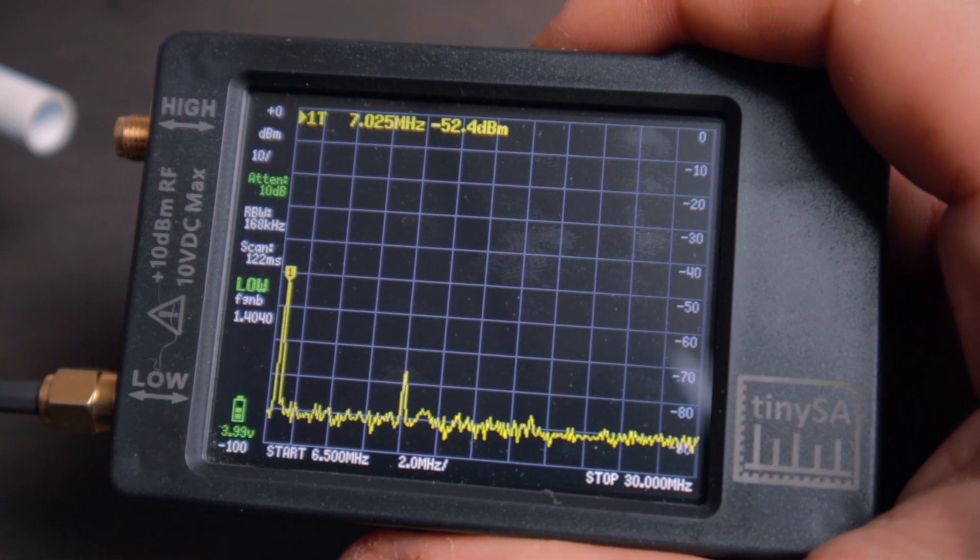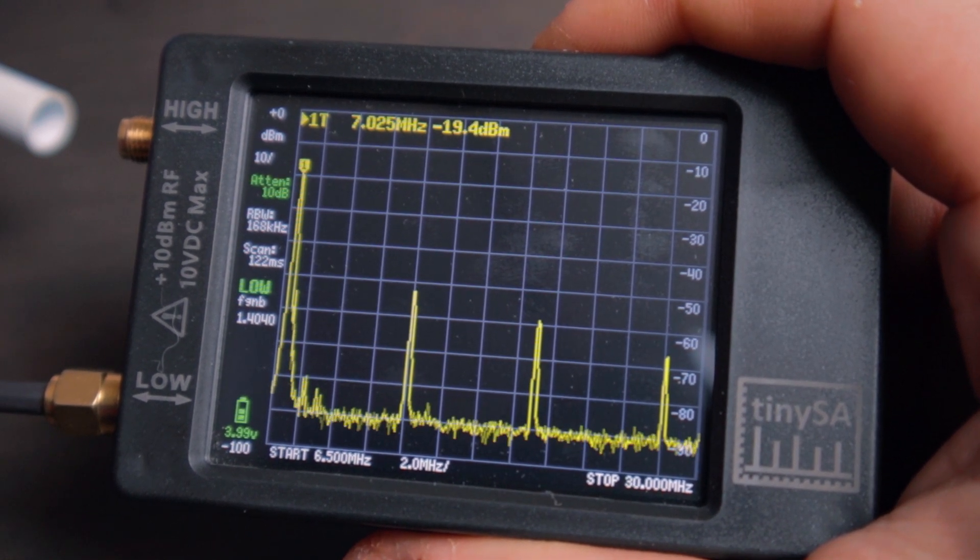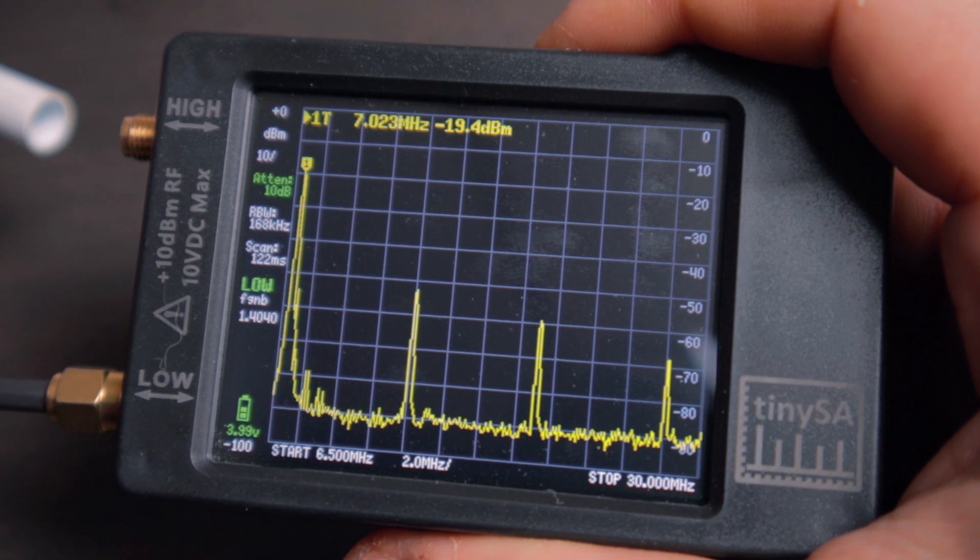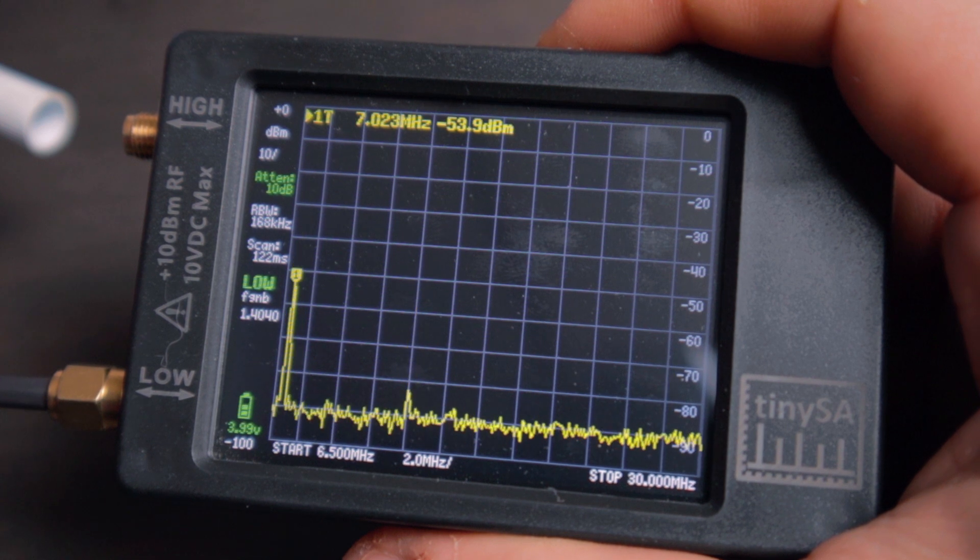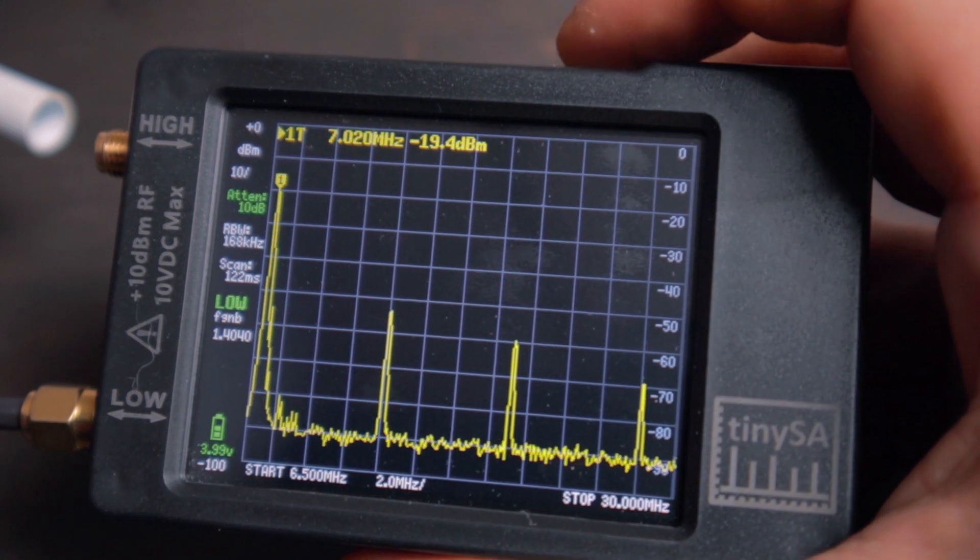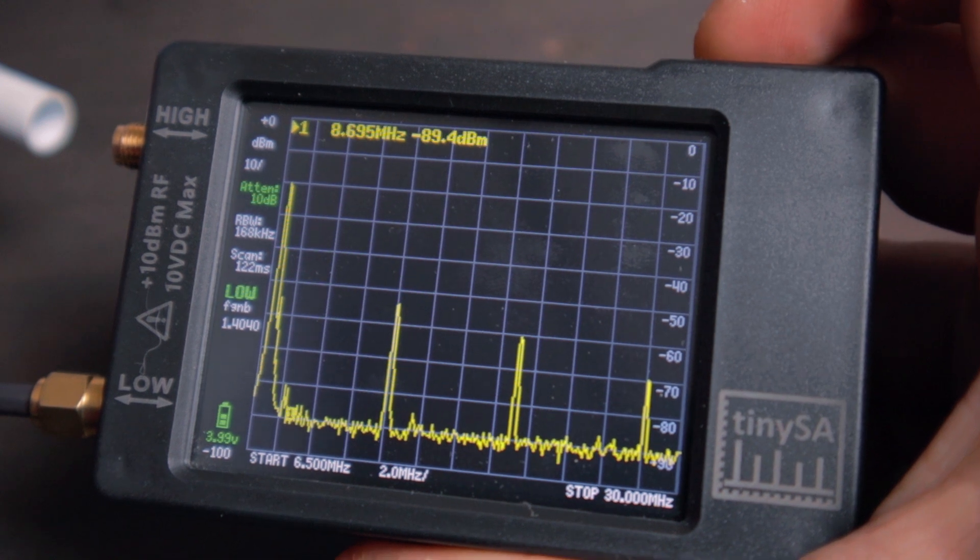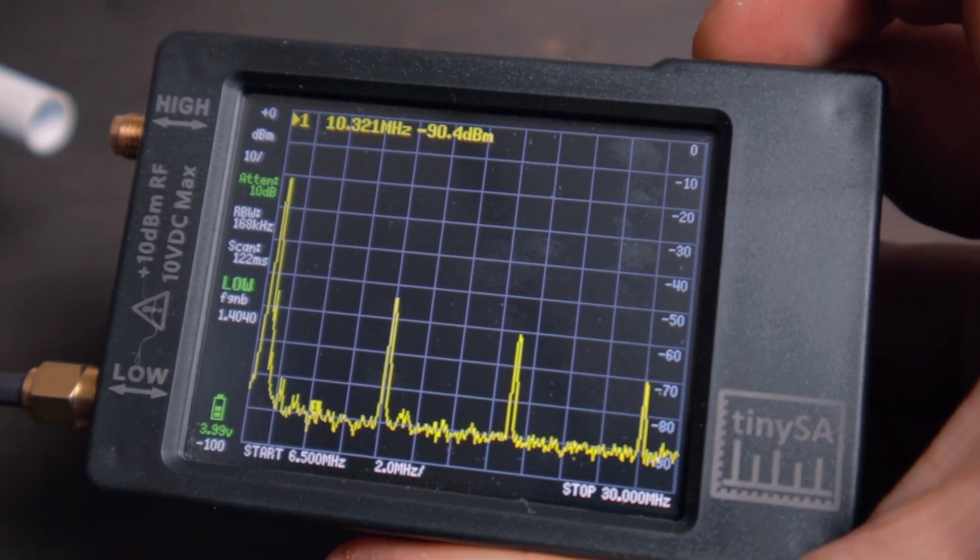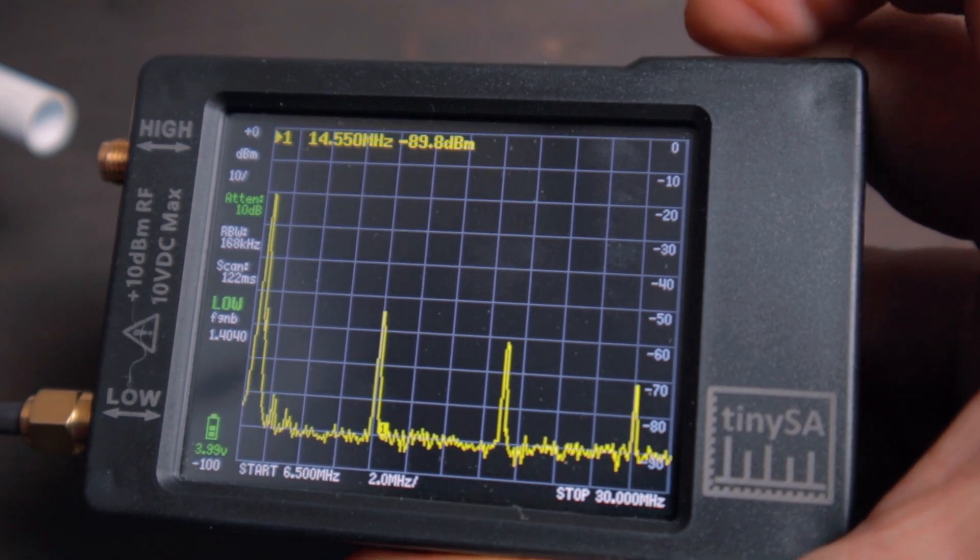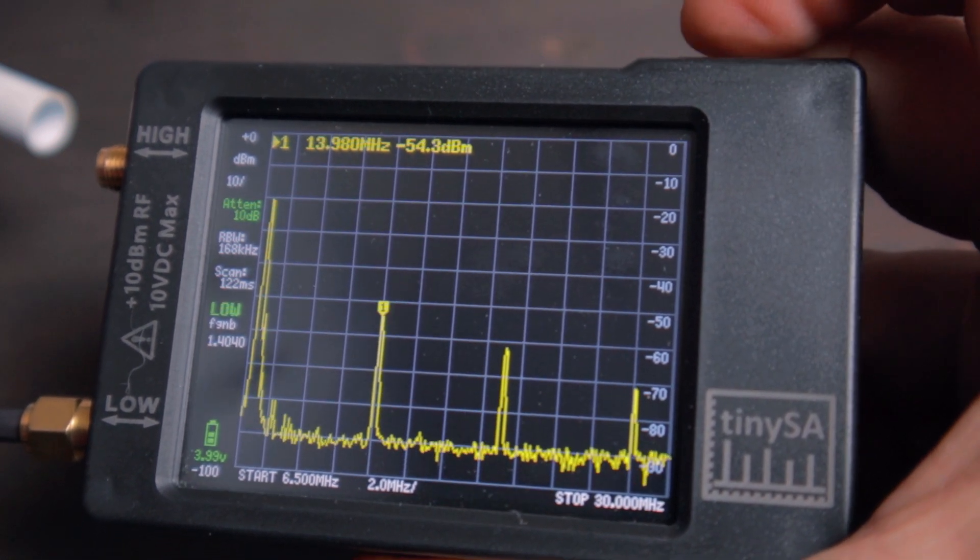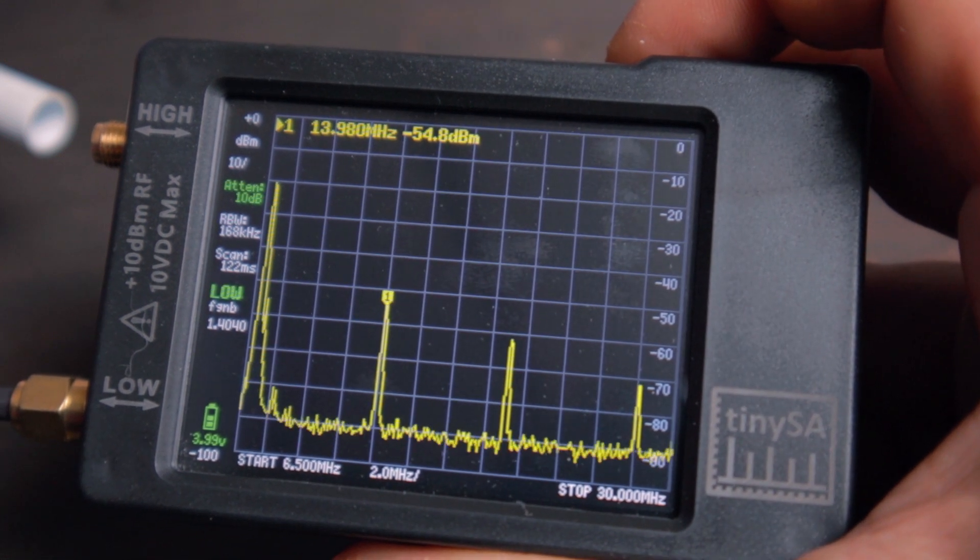So let's transmit and see how high the fundamental goes. Somewhere around minus 19 dB, 19.4. And the second harmonic, it's under minus 50. So the second harmonic is at minus 54.